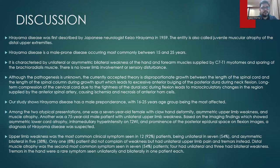Hirayama disease was first described by Japanese neurologist Izo Hirayama in 1959. The entity is also called juvenile muscular atrophy of the distal upper extremities. It is a male-prone condition occurring most commonly between 15 and 25 years of age, characterized by unilateral and asymmetric bilateral weakness of hand and forearm muscles supplied by C7 to T1 myotomes with sparing of the brachioradialis muscle, and no lower limb involvement or sensory disturbance. The currently accepted pathogenic theory is disproportionate growth between the spinal cord and vertebral column during growth spurt, leading to excessive anterior bulging of the posterior dura during neck flexion, causing ischemia and necrosis of the anterior horn cells.